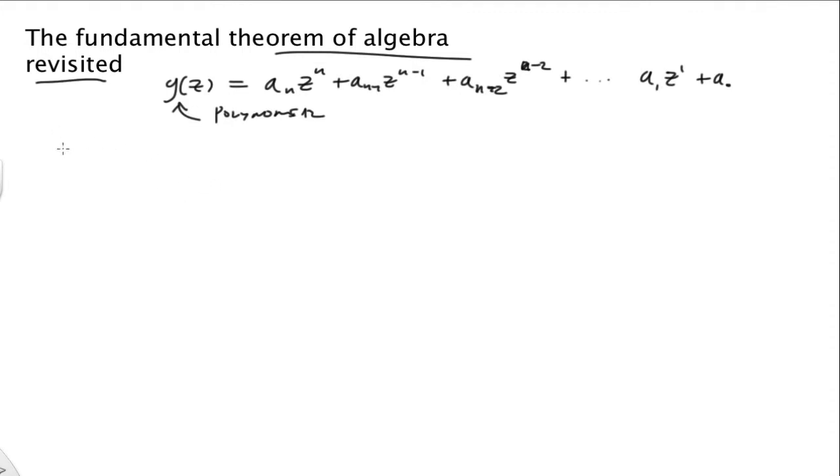And now the fundamental theorem of algebra states that there exists some z_1 in the complex plane. I should note that these coefficients could be complex numbers and z itself is a complex number. So there exists a z_1 in the complex plane such that G(z_1) equals 0. What we're saying is we can always find a root.